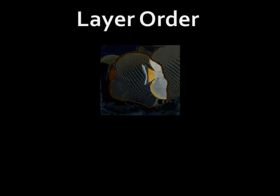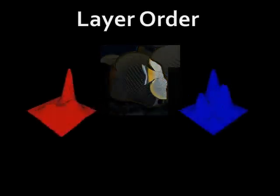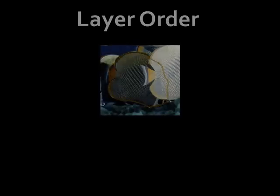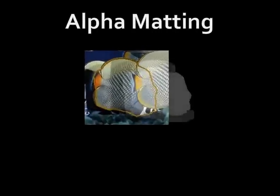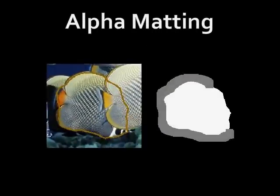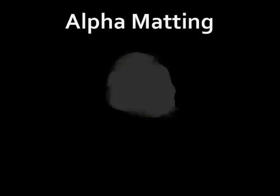To determine the relative depth ordering where instances overlap, we use Gaussian mixture models to analyze color information. We use topological sorting to infer a consistent layering for all instances. We use alpha matting with a trimap to determine precise object region boundaries and opacity, setting non-overlap boundary regions as unknown areas in the trimap.